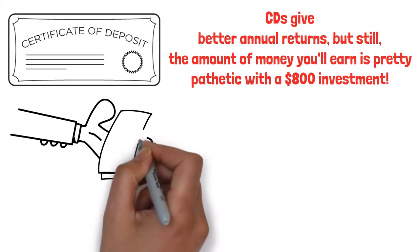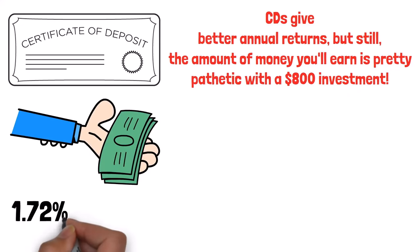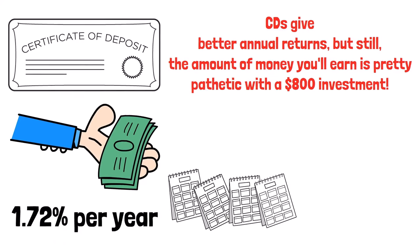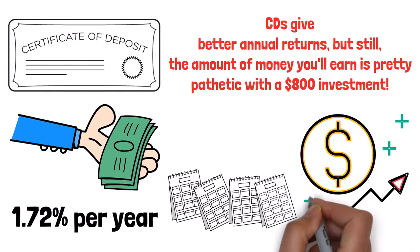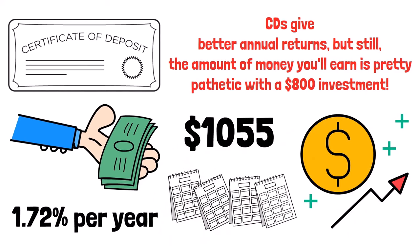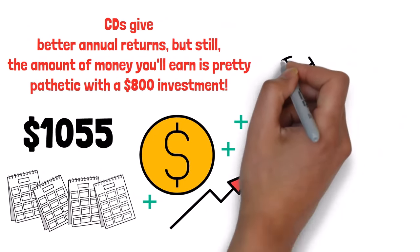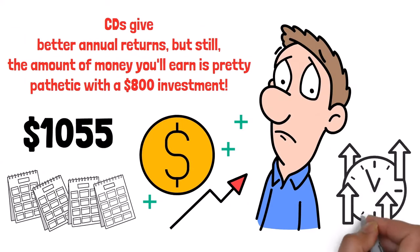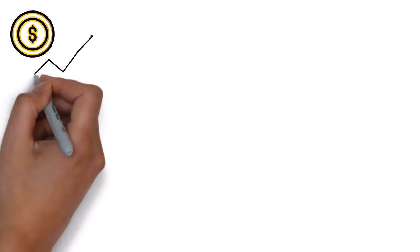So what makes CD accounts better than savings accounts? Well, CDs give better annual returns, but still, the amount of money you'll earn is pretty pathetic with an $800 investment. You see, the average return of a CD in America right now is about 1.72% per year. So this means after four years, your $800 would yield a total of $1,055.